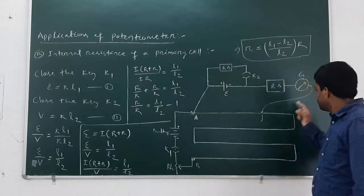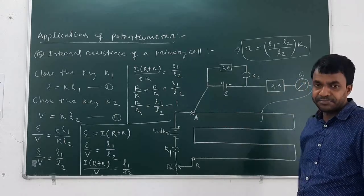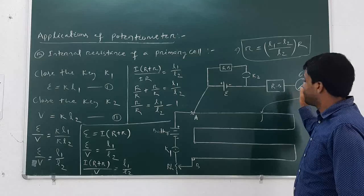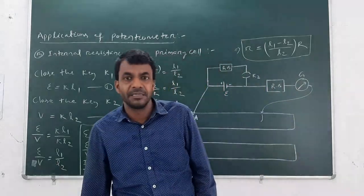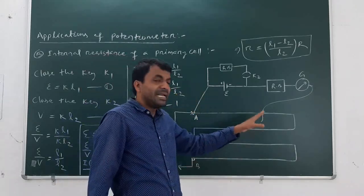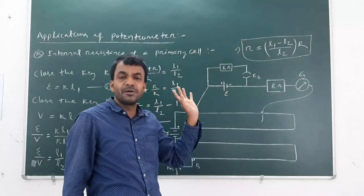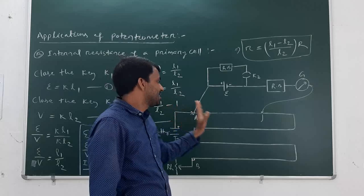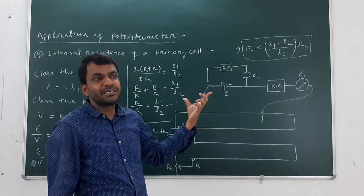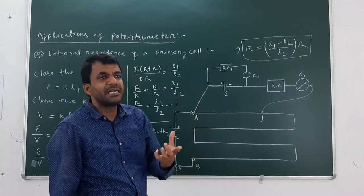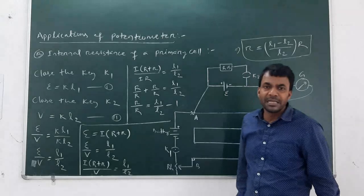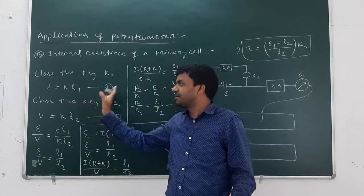A constant current will pass through the cell. Slide the jockey on the wire of the potentiometer until the galvanometer shows no deflection — find the null point. Let at some point the galvanometer shows no deflection; this length is L₁. According to the principle of the potentiometer, EMF is directly proportional to L₁, so EMF = KL₁. This is equation 1.